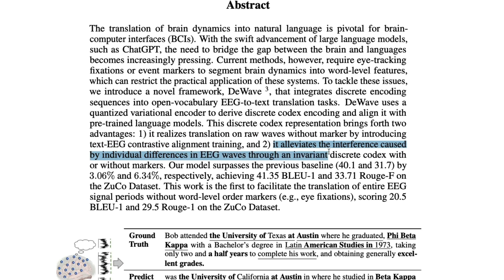The second advantage is that it alleviates inference caused by individual differences in EEG waves through an invariant discrete codex, with or without markers. Typically these markers cause interference between two EEG waves that can mess up translation. Using the discrete codex avoids that situation. The model claims improvement over the previous baseline of 40.1 and 31.7 on benchmarks called BLEU and ROUGE-F, now achieving 41.35 and 33.71.